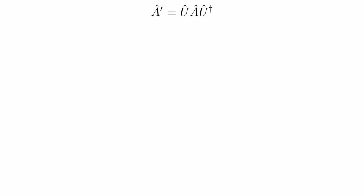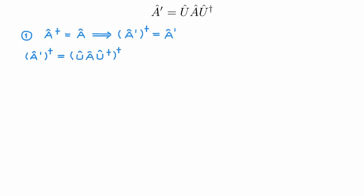Let's now explore some properties of unitary transformations of operators. First, I want to show that if A is a Hermitian operator, then its unitary transformation is also Hermitian. To see this, consider (A')†. We expand A' in terms of its unitary transformation. The adjoint of a product is the product of the adjoints in reverse order, giving (UAU†)† = UA†U†, which is simply the unitary transformation of A†. Additionally, if A is Hermitian, then A† = A, so (A')† = A', confirming that the unitary transformation of a Hermitian operator is itself Hermitian.